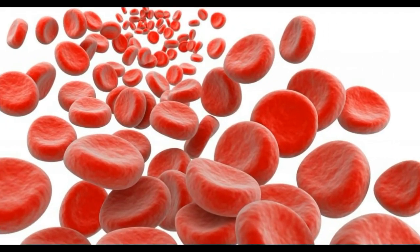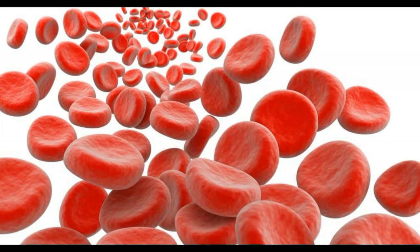Animals with an open circulatory system have hemolymph, a fluid combining blood and interstitial fluid, rather than blood. It contains only one type of cell: hemocytes. Hemocytes, like the leukocytes of humans and other animals, are part of the immune system. They are phagocytic cells that ingest foreign particles and pathogens and serve in signaling within the body.